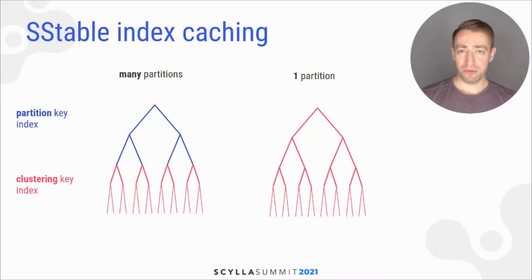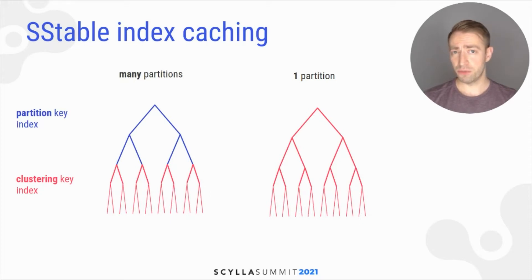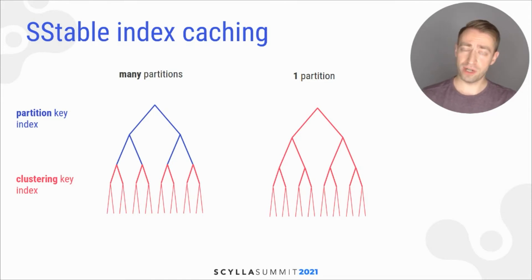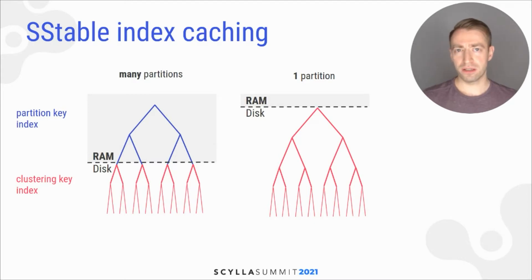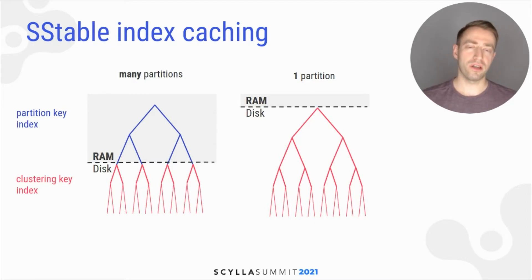There is still a performance gap when you have a large partition and split it into many — you grow your partition key index by shrinking your clustering key index. Currently the partition key index is cached in memory, but the clustering key index is not.